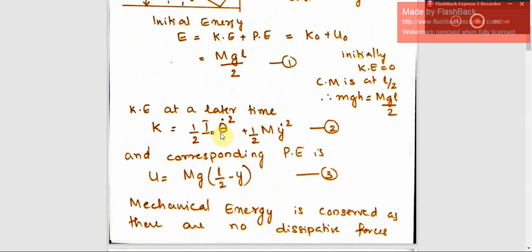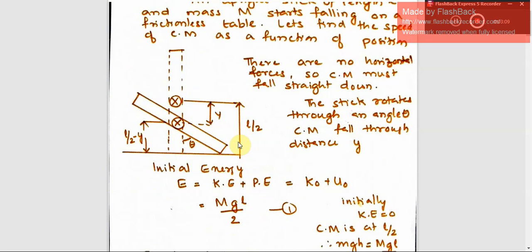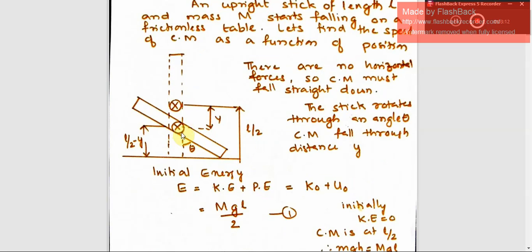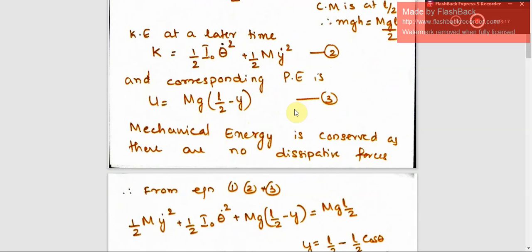Theta dot is omega. So the kinetic energy is (1/2)Iω² plus (1/2)mv², where v is the velocity of the center of mass. Y dot represents the velocity, and y is the displacement, so this is (1/2)mẏ². This is the kinetic energy at the later stage. The corresponding potential energy is mg(L/2 minus y), since the center of mass is now at height L/2 minus y.